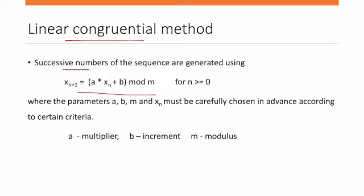X(n+1), the n+1th number, is obtained from the nth number by the formula: X(n+1) = (a × X(n) + b) mod m, where n ≥ 0. The parameters a, b, m, and X(n) must all be chosen.